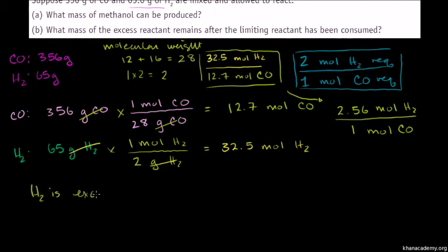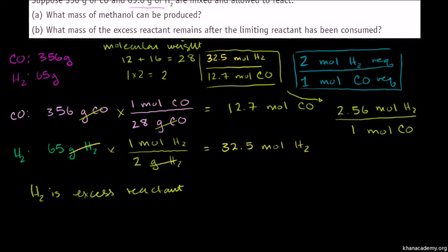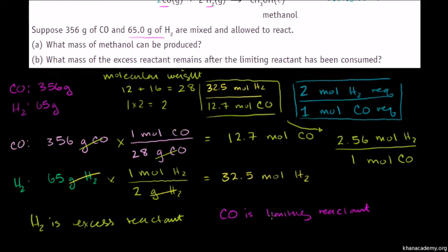Hydrogen is the excess reactant. And the other one is going to be the limiting reactant. We don't have enough carbon monoxide to react all of the hydrogen — it should be a 1 to 2 ratio — so carbon monoxide is the limiting reactant. Given that hydrogen is the excess reactant, we can use the stoichiometric ratios to figure out how much methanol is going to be produced. It's all going to be limited by our carbon monoxide.